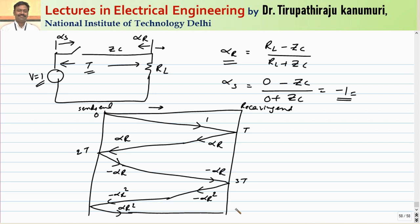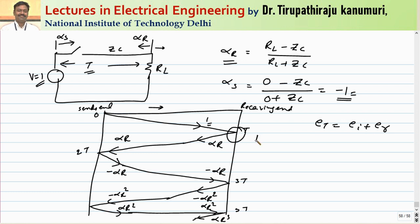Continuing: −αr² reaches the sending end and is multiplied by −1, giving +αr². This αr² reaches the receiving end at time 5t and is reflected to give αr³, and so on. To find the voltage at the receiving end after time t, the transmitted voltage equals incident plus reflected: 1 + αr. This magnitude 1 + αr remains the same from t to 3t.